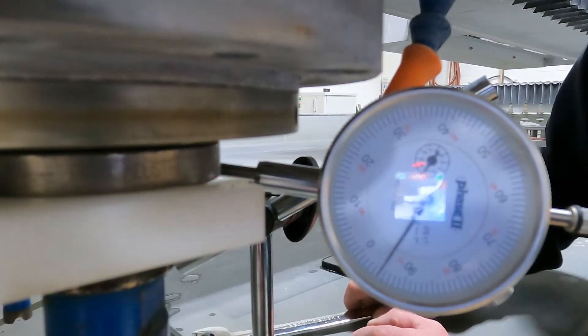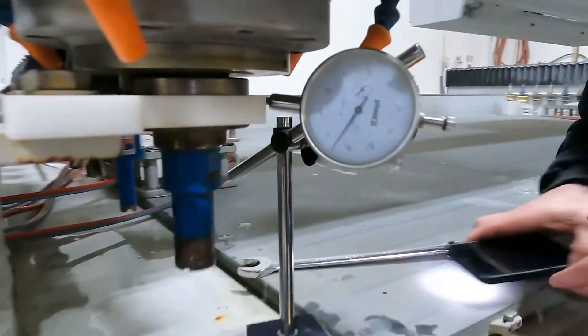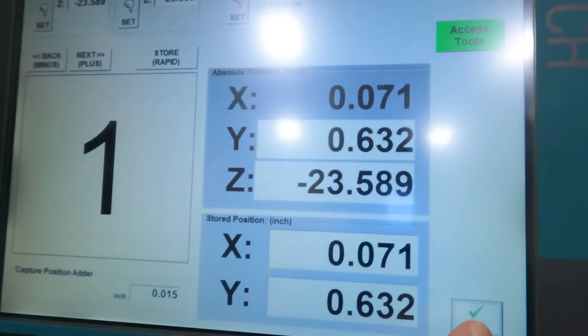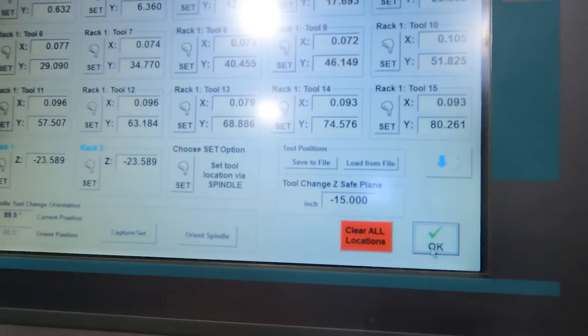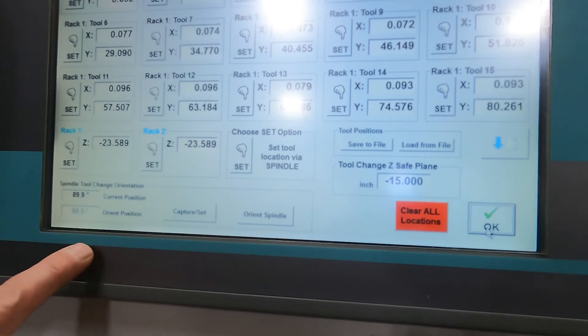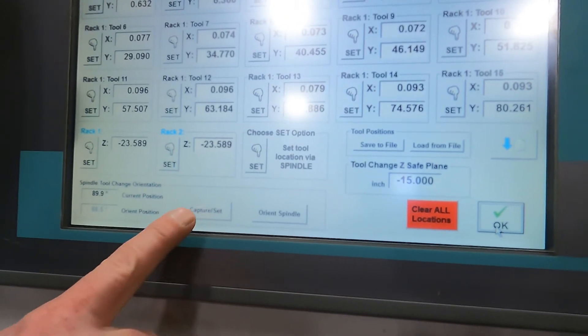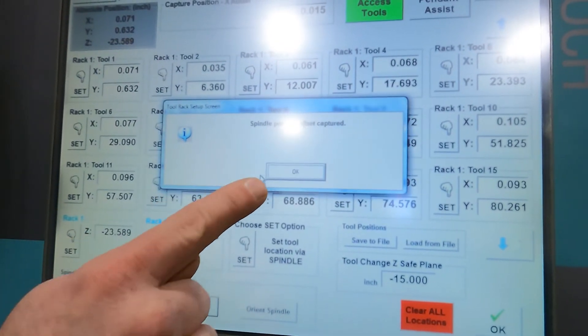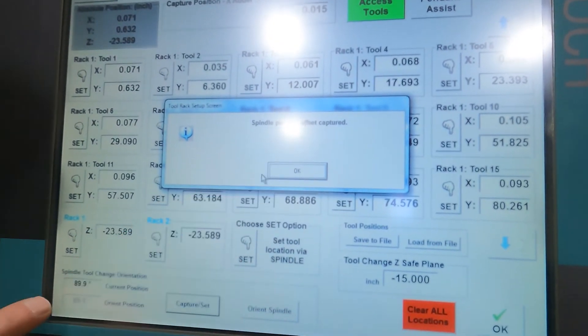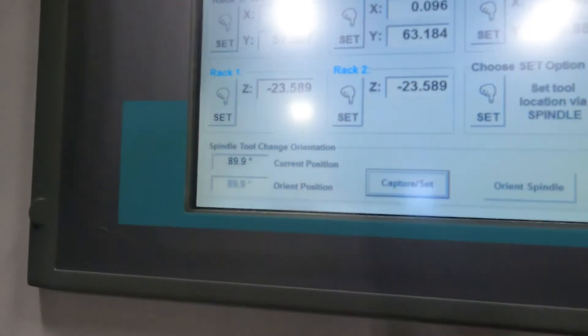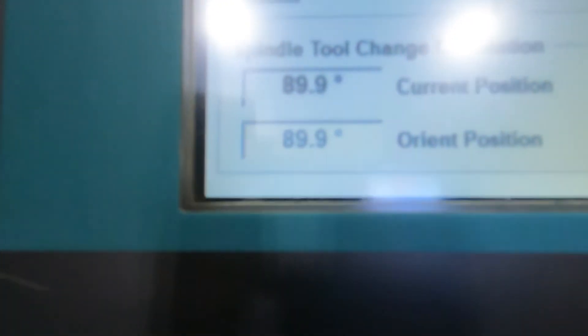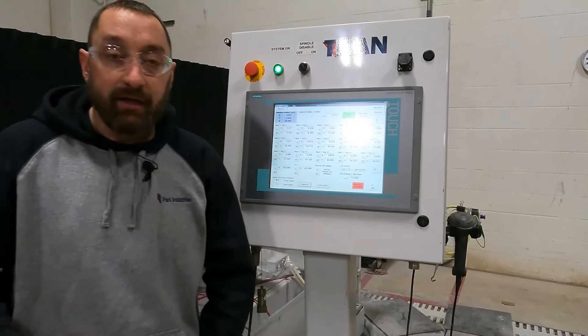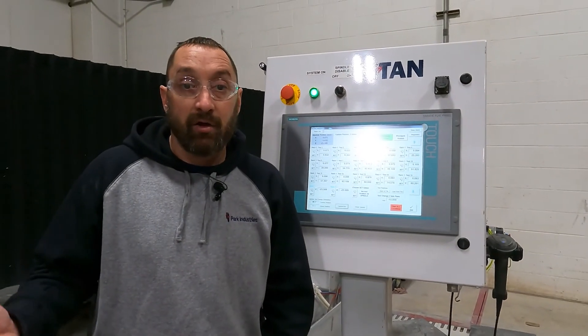About there. So once I have center with that dial indicator, we're going to go back up to our screen. We're going to go back to our tool rack location. And down in the bottom corner here, we are going to capture that. Hit yes. And okay. Actually my values match there. So we are all good. Our tool is orientated. Now the spindle knows what position it needs to be in when it changes tools.